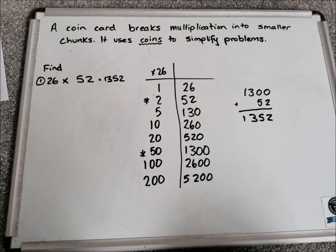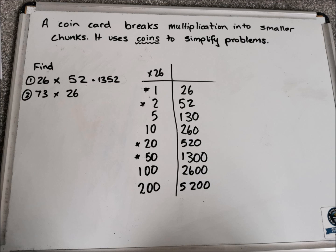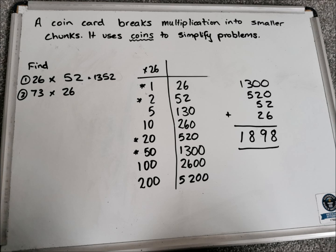Another question might be 73 multiplied by 26. This time we're going to have to make up 73. So we could use the 50, the 20, the 2, and the 1 to make 73. So in an addition sum at the side, we're going to use 1,300, 520, 52, and 26 to solve the problem. Taking our time to add that up, we should get 1,898 as the answer.